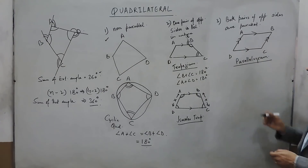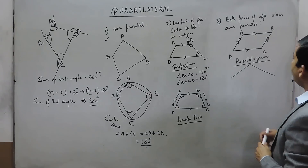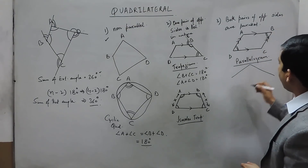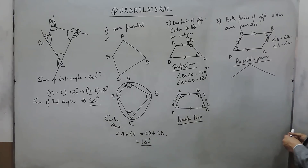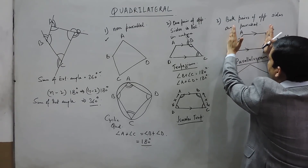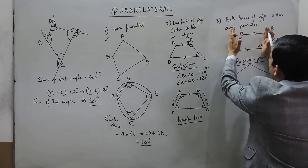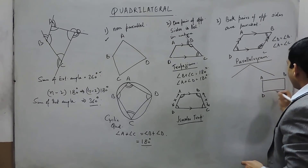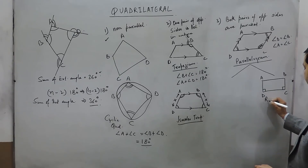Besides the basic parallelogram, there are three more figures possible. In a parallelogram, the length of AB equals CD and the length of AD equals BC; they are parallel and opposite angles are equal — angle B equals angle D and angle A equals angle C. If we adjust the angles so that angle C decreases and angle D increases until both become 90 degrees, the figure becomes a rectangle, where AB and CD are parallel, BC and AD are parallel, and all angles are 90 degrees.